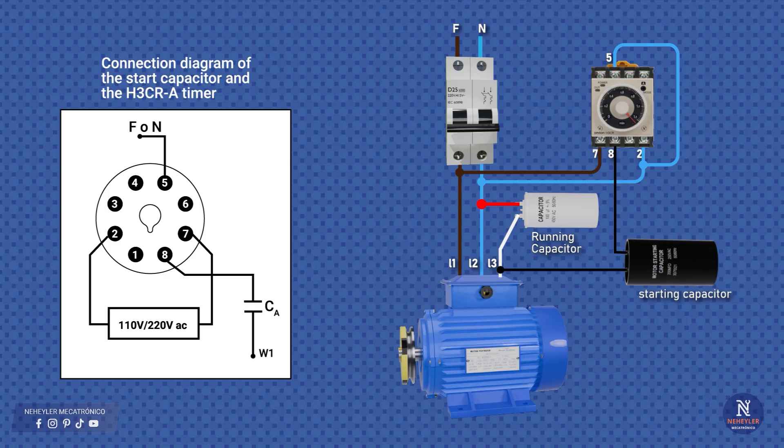Before turning on the motor, it is important to adjust the disconnection time on the timer. This must be between 3 and 5 seconds, depending on the motor power. In this way, when turning on the motor by switching the circuit breaker, the NC contact of the timer is closed and the start capacitor enters service. Then, after the configured time, the timer opens the contact and disconnects the start capacitor, leaving only the run capacitor in operation to maintain motor rotation.